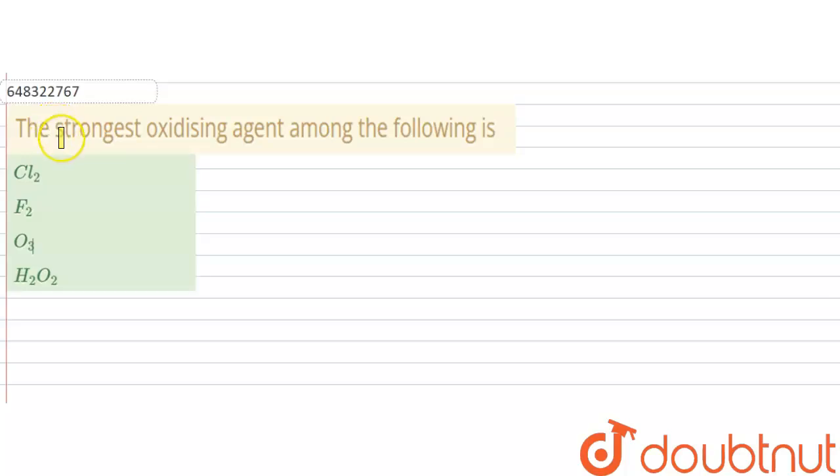At the question. The question says that the strongest oxidizing agent among the following is, and here we have chlorine, fluorine, ozone, and hydrogen peroxide.